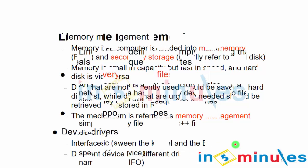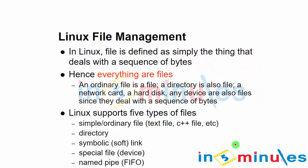Moving to Linux file management — in Unix and Linux, a file is defined as a collection or sequence of bytes, so essentially everything is a file. What we tend to work with is reading and writing. Linux supports five types of files.